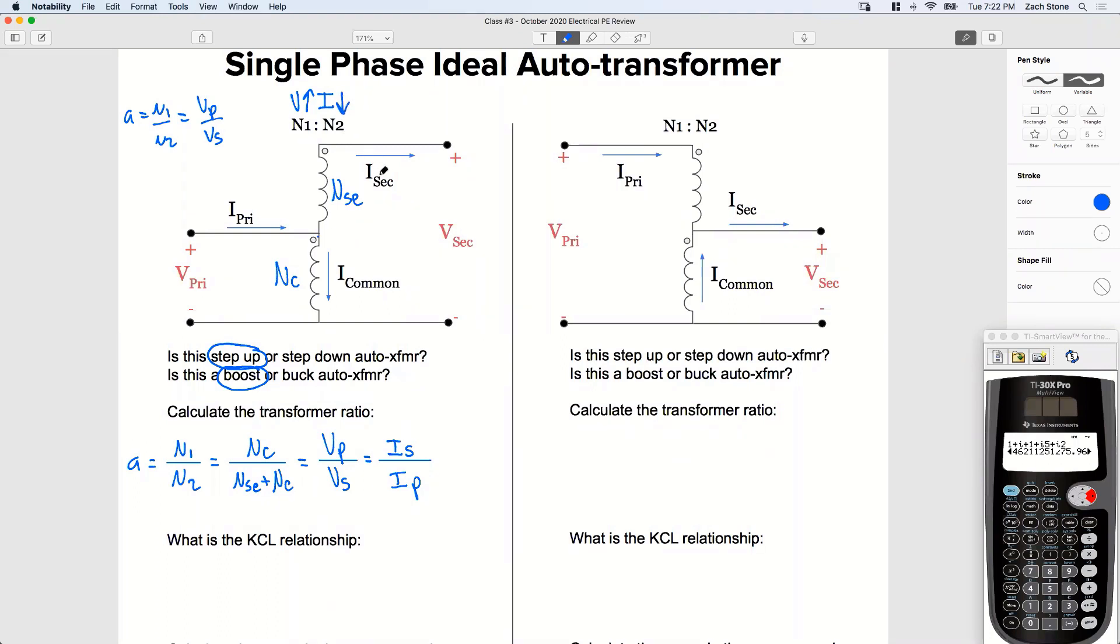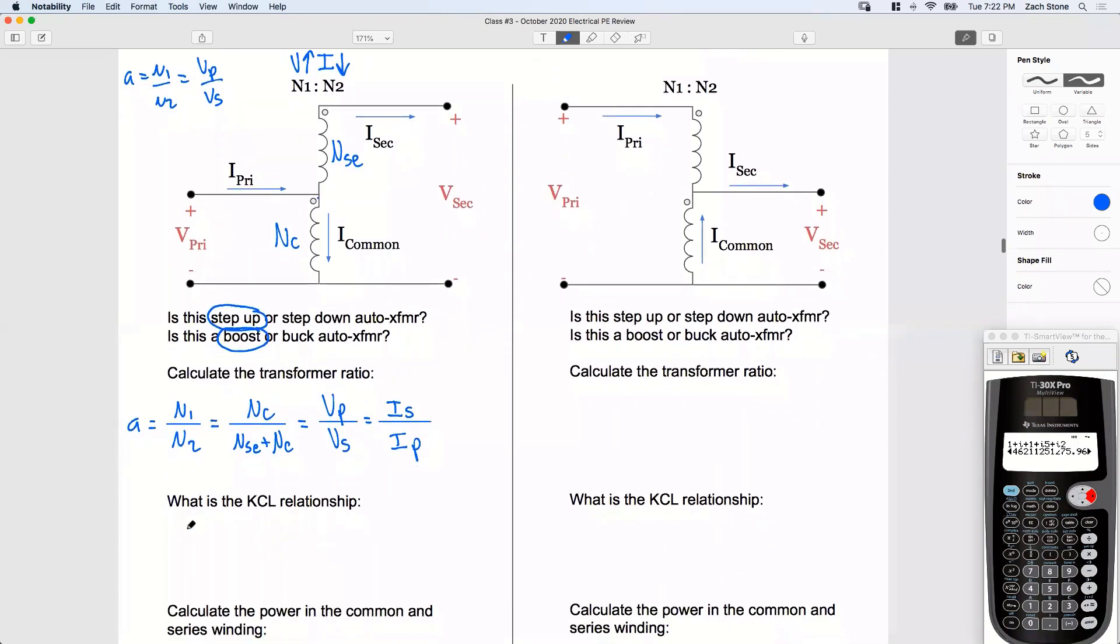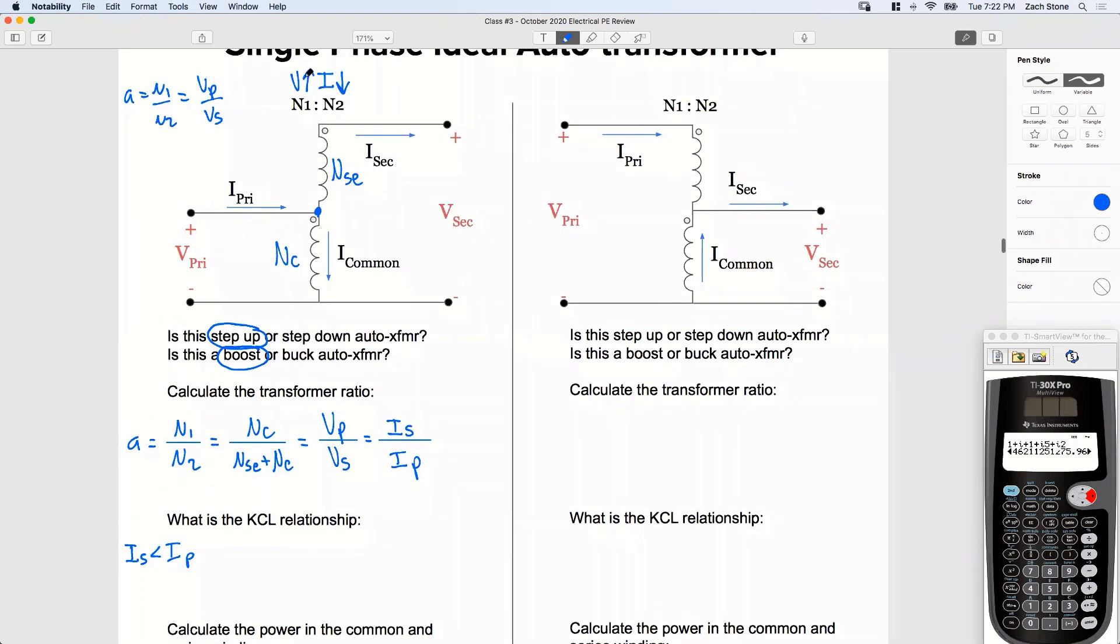That means I secondary is smaller than I primary. I secondary is smaller than I primary. So we can write a KCL relationship right at this common node right here. If my common current was flowing into this node, then I secondary would equal the sum of I primary and I common. But that would make our secondary bigger. Since I secondary is smaller than I primary, since this is a voltage step-up, so our current goes down, that means the common current in the common winding has to flow down in a way. See that?